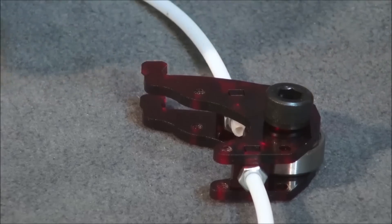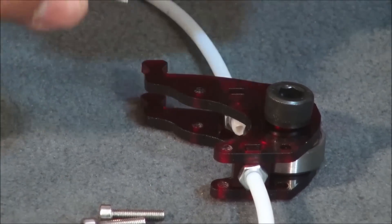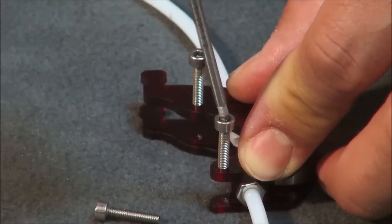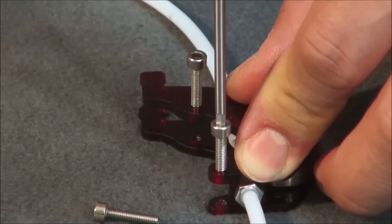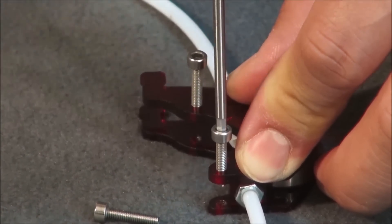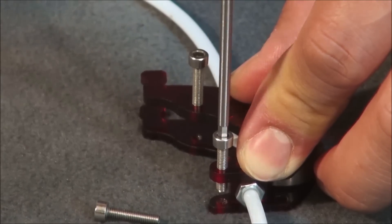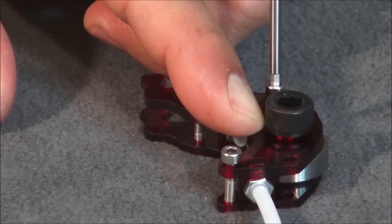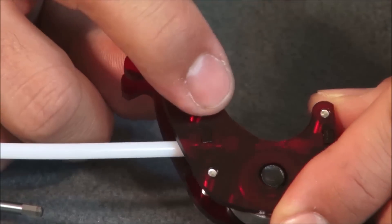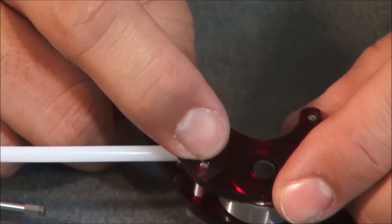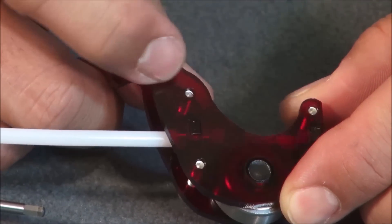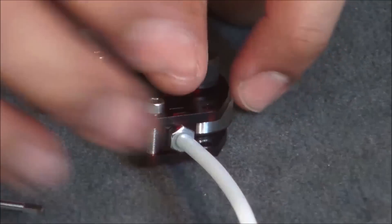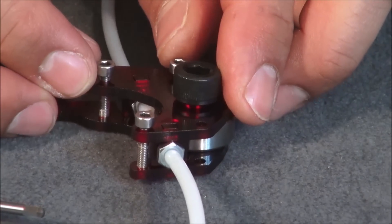Now you'll take your three M3 by 14 millimeter bolts and you're going to install them here, here, and here. These thread through the top into the bottom. You want to make sure that your threading does not protrude through the bottom side of your acrylic. It should be a flat surface all through here. If it does come out further, you want to back off from the other end of your screws.